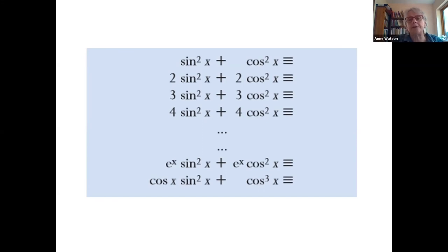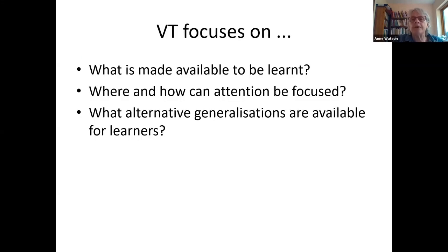Variation theory focuses on what is available to be learned and it's made available by the focusing of attention by using variation. And there are alternative generalizations possibly available for learners because you never know what they're going to see or how they're going to make sense of it, but you can anticipate some of those beforehand because if you control the variation, you control what there is to pay attention to. And that's variation.